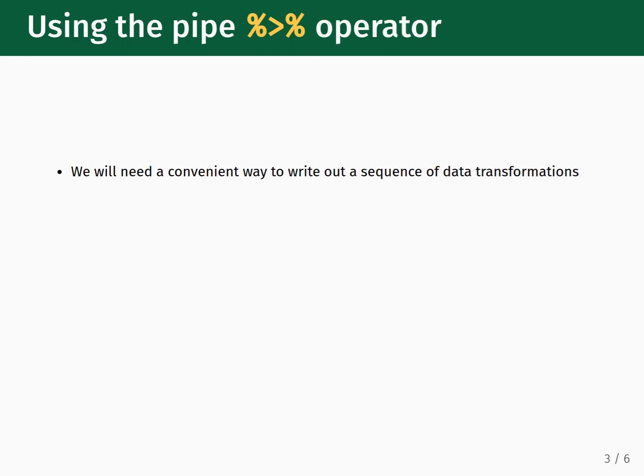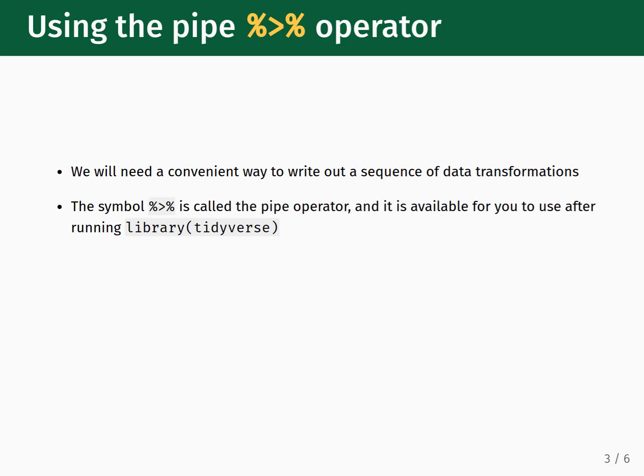A convenient way of applying a sequence of transformations to our dataset is the pipe operator, which is symbolically represented as percent sign, greater than sign, percent sign.